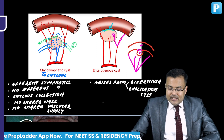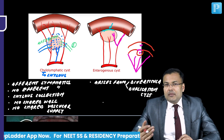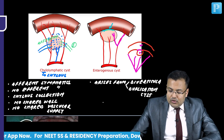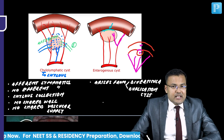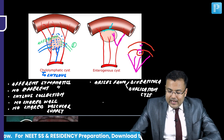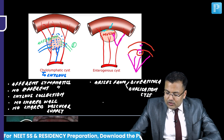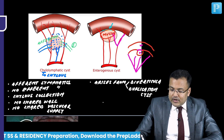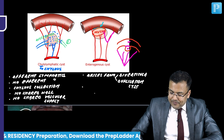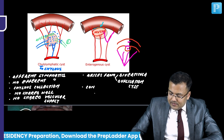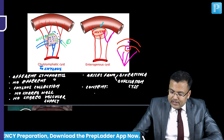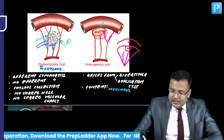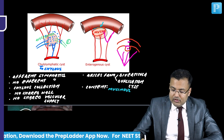The lining of this cyst is columnar epithelium, because columnar epithelium lines the small intestine. Since the lining is columnar epithelium, the content is mucinous - because columnar epithelium has goblet cells, and goblet cells secrete mucin. There is shared wall and shared vascular supply.